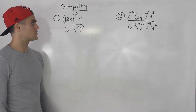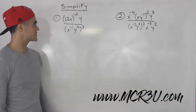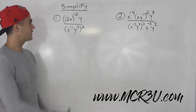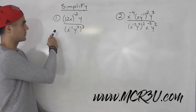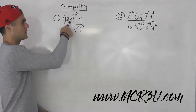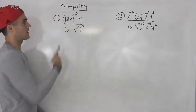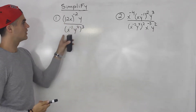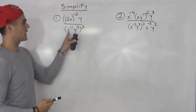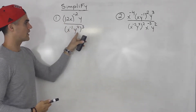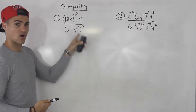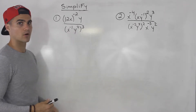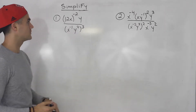Welcome back guys. Moving on to more expressions to simplify. Starting with number one, we have 12x in brackets to the power of negative two, times y, all over x to the negative one, y squared, and that's all to the power of three.